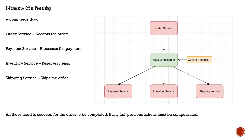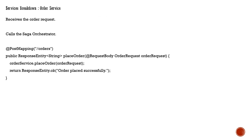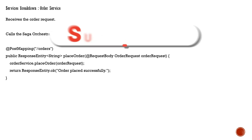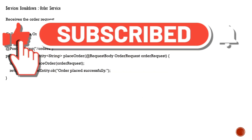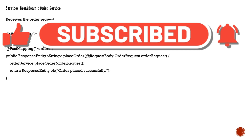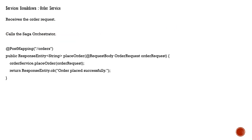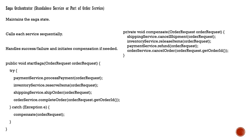Now let's look at the service-level details. In the order service, when an order request is received, it calls the Saga orchestrator, places the order, and returns a success response indicating the order is placed. The orchestrator maintains state — it can be a standalone service or part of the order service itself, and that can be decided by the architecture team based on pros and cons.